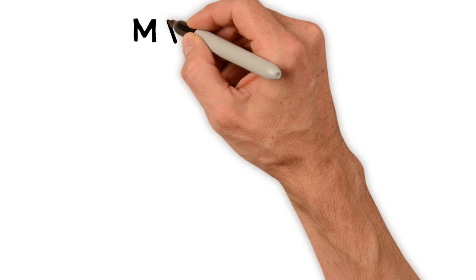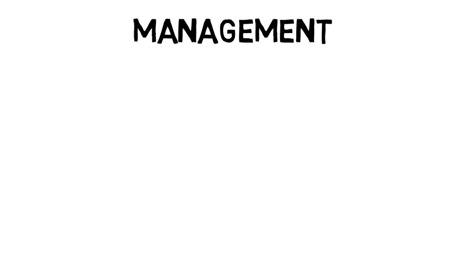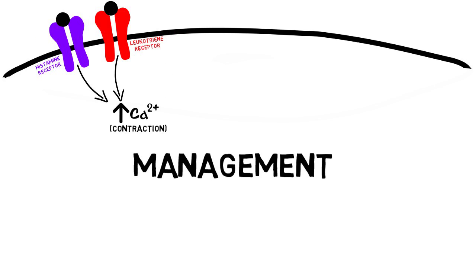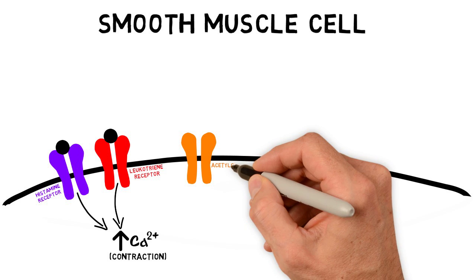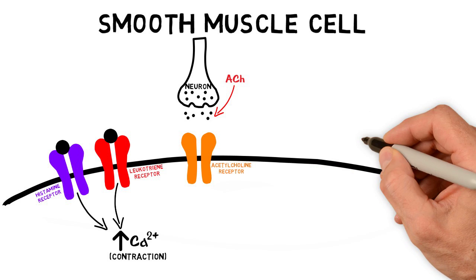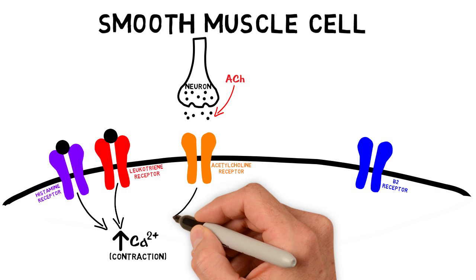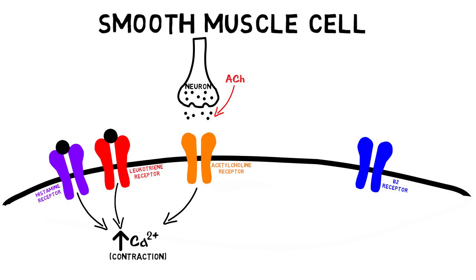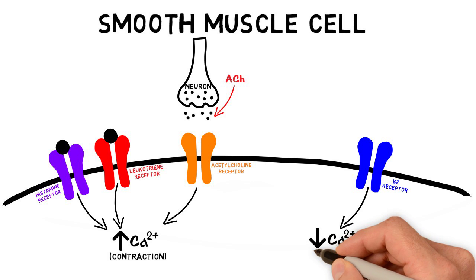The goal of asthma management is to relieve bronchoconstriction and prevent respiratory failure. Smooth muscle cells also have muscarinic receptors that bind acetylcholine, as well as beta-2-adrenergic receptors. The muscarinic receptors promote contraction, whereas the beta-adrenergic receptors promote relaxation.